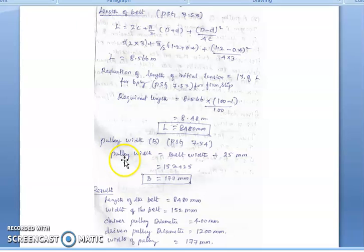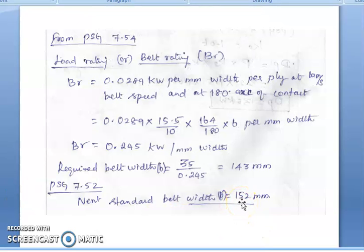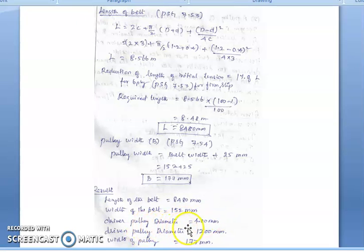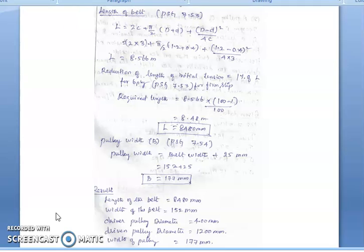For pulley width, from page 7.54, since belt width exceeds 120 mm, pulley width = belt width + 25 mm = 152 + 25 = 177 mm. Final results: belt length = 8480 mm, belt width = 152 mm, driver pulley diameter = 400 mm, driven pulley diameter = 1200 mm, pulley width = 177 mm. If the problem also asks for pulley design, we consider arm dimensions, rim dimensions, and hub dimensions.